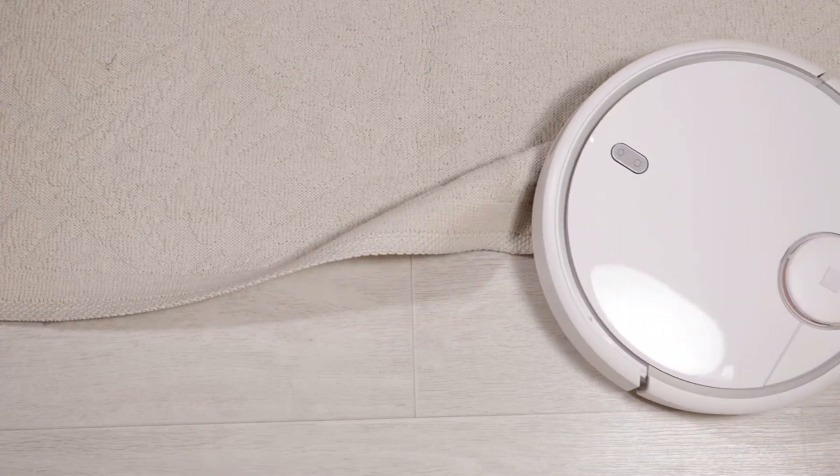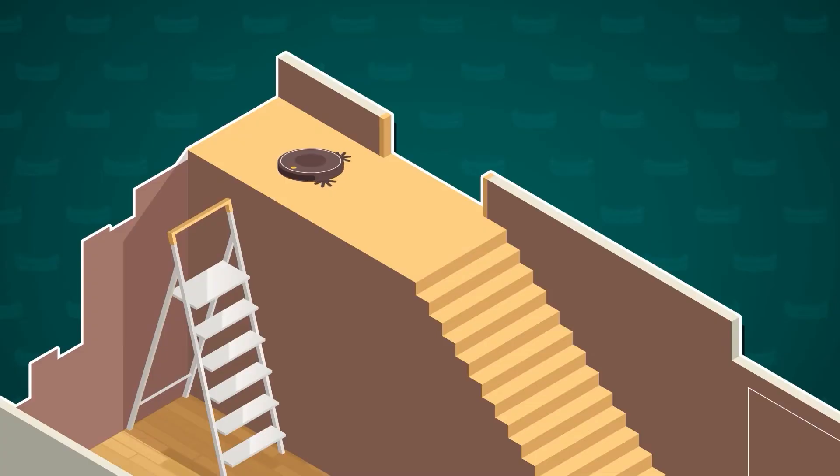Leo learns that the robot vacuum has safety features too. If it approaches stairs, sensors prevent it from tumbling down, ensuring it stays on course and safe.